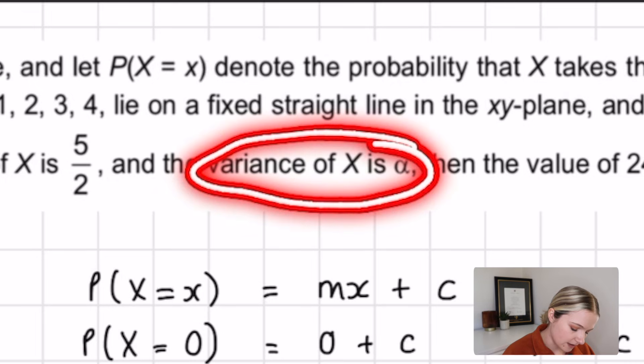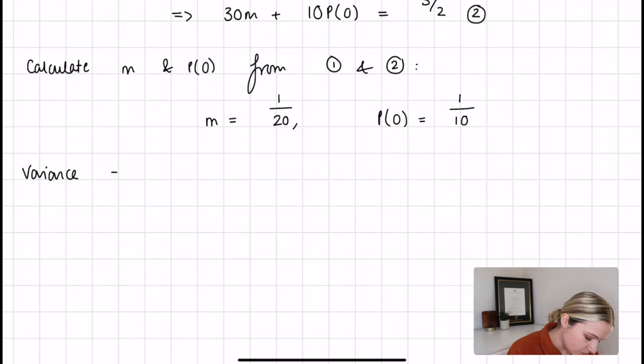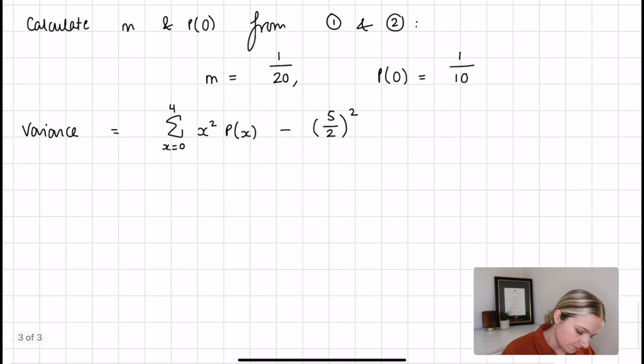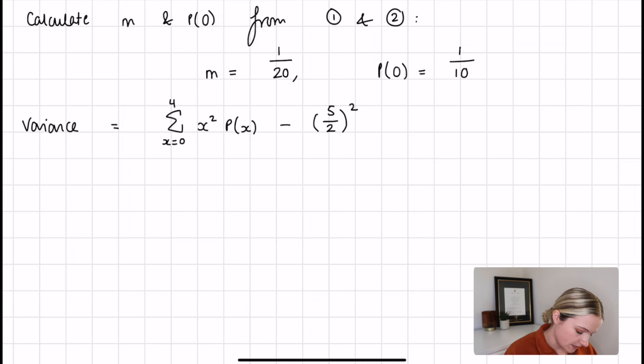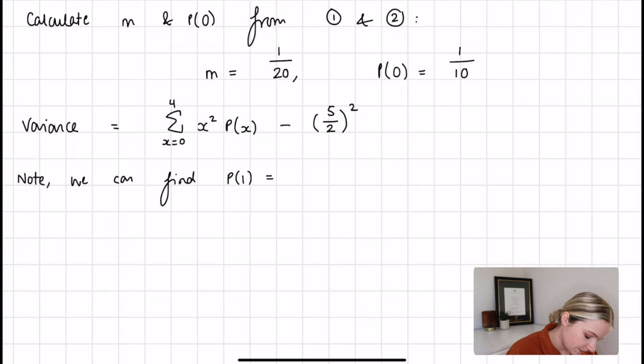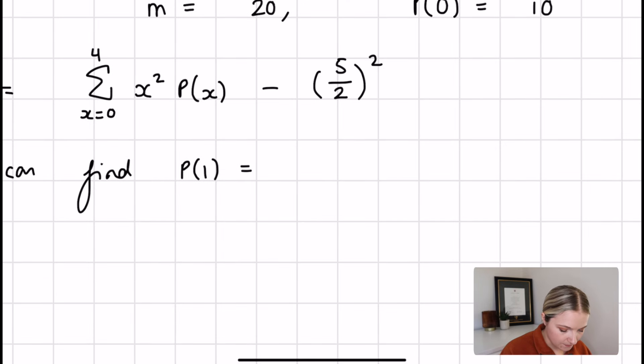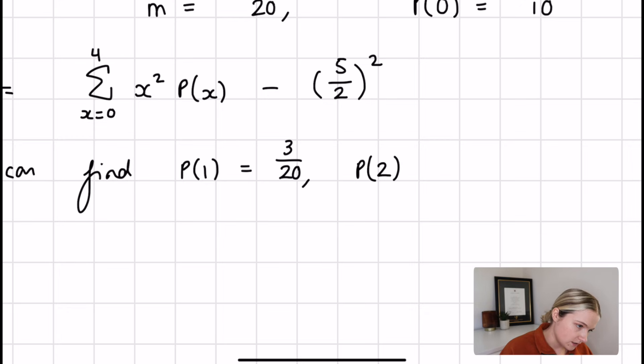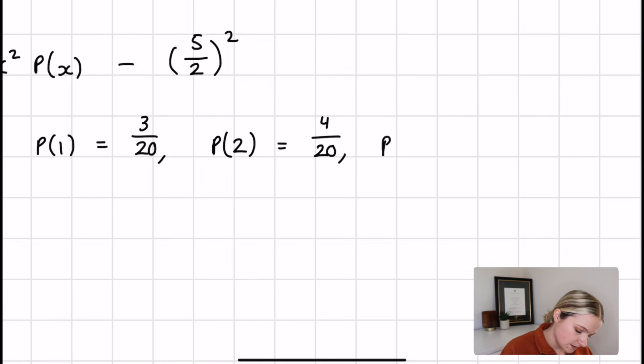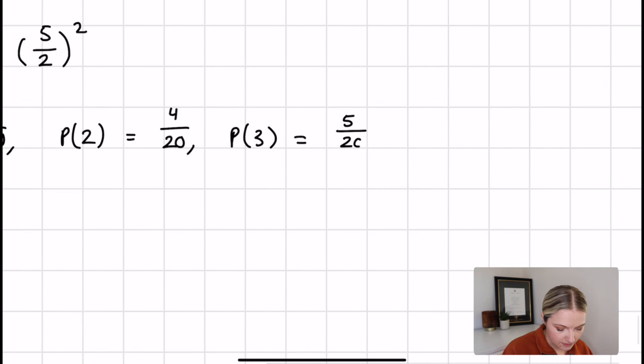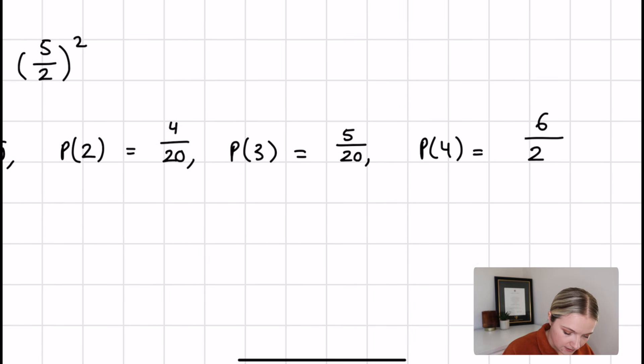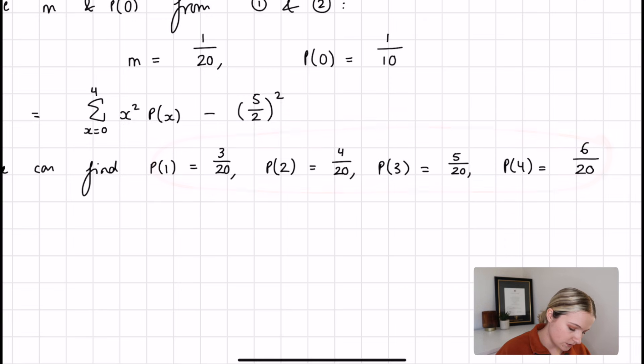The next thing we are told is that the variance of X is alpha. So let's start writing that down. Variance, which we know can be given by the summation from x equals 0 to 4 of x squared P(x) minus the mean squared, which is 5 over 2 squared. What's left to do with this is substitute in again. Note we can find the individual probabilities. We simply just substitute in the value for m and P(0). So we find that P(1) is 3 over 20, P(2) is 4 over 20, P(3) is 5 over 20, and P(4) is 6 over 20. So what's left to do is take these and use them when calculating the variance.